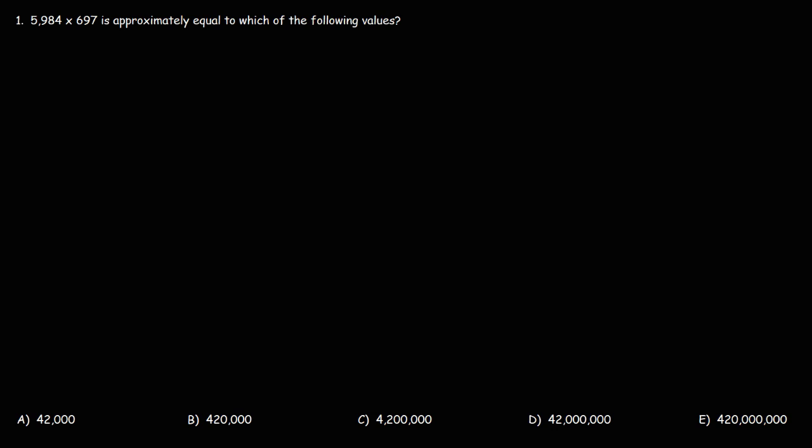Well, looking at our answer, we can see that there are a lot of zeros. So, what we're going to do is round the first one to the nearest thousand. 5,984 is approximately 6,000. Now, we're going to do the same with 697. We could round that up to the nearest hundred. 697 can be rounded to 700.